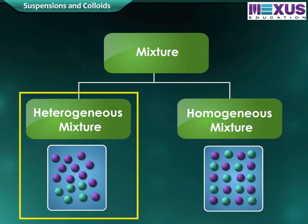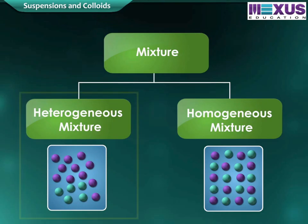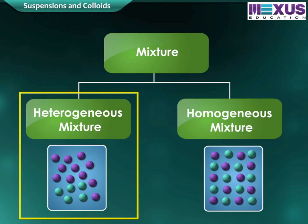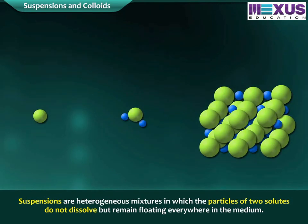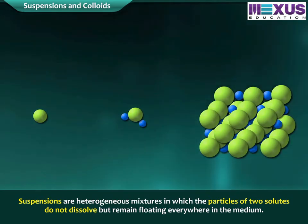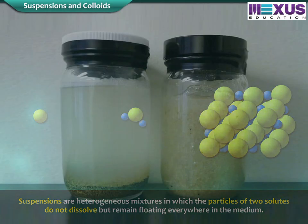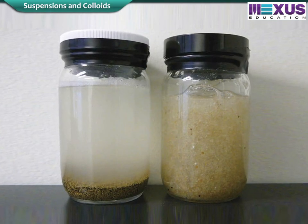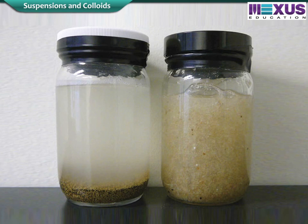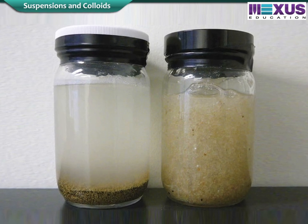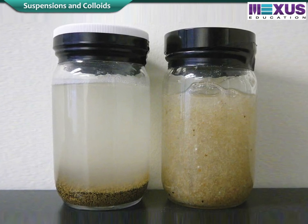Heterogeneous mixtures include suspensions and colloids. Suspensions are heterogeneous mixtures in which the particles of two solutes do not dissolve but remain floating everywhere in the medium. Sand grains suspended in water and dust particles suspended in air are a few examples of suspensions.